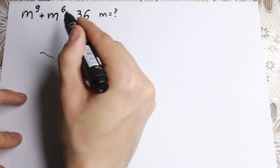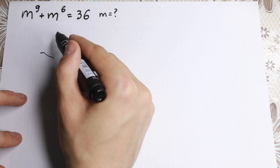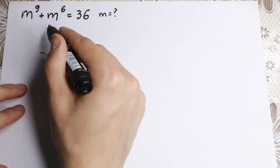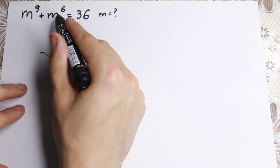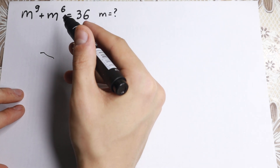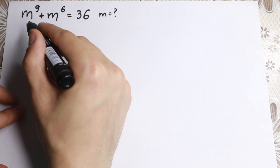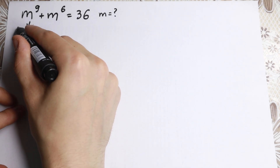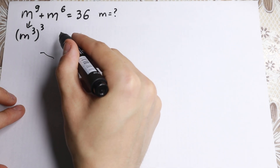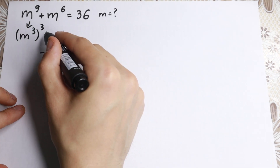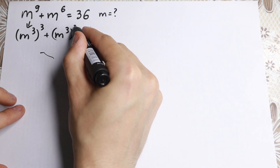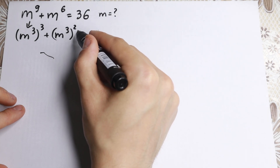We have the 9th and 6th power. What do they tell us? 9 can be divided by 3 and 6 can be divided by 3 — that's really good. So m to the 9th we can write as m-cubed raised to the 3rd power, and m to the 6th as m-cubed raised to the 2nd power, equal to 36.